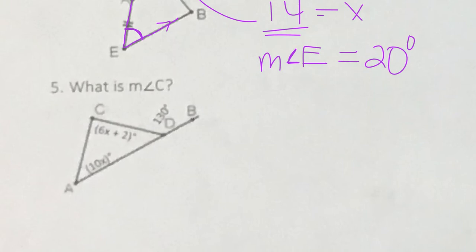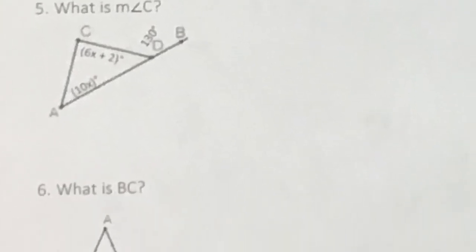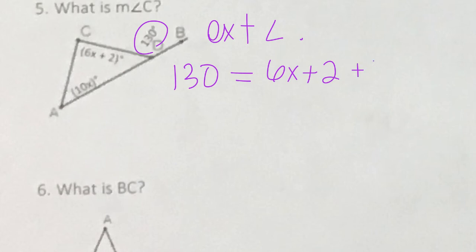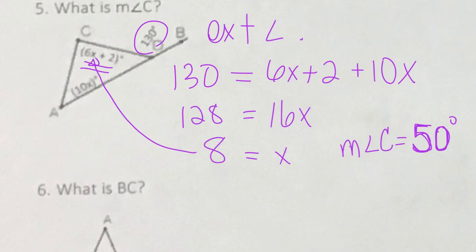Number five looks like an exterior angle problem — the angle out here is your exterior angle. Applying the exterior angle theorem, the exterior angle equals the sum of the two remote interior angles, which are 6X plus 2 and 10X. Solving for X gives 8, and plugging back in: 6 times 8 plus 2 is 50, so the measure of angle C is 50 degrees.